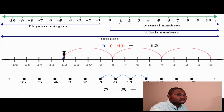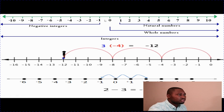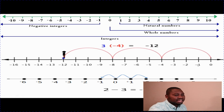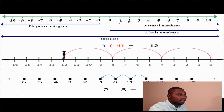Going on the right side, those are the positive numbers: 0, 1, 2, 3, 4, 5, 6, 7, 8, 9, all the way to positive infinity. And from 0 we have negative 1, negative 2, negative 3, negative 4, negative 5, all the way to negative infinity.